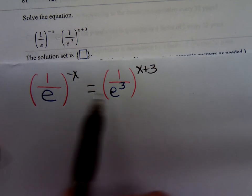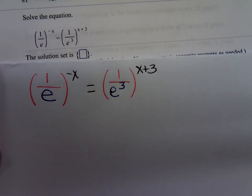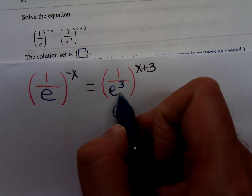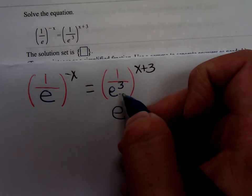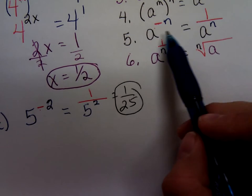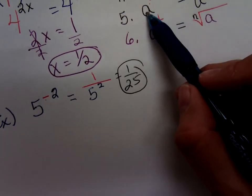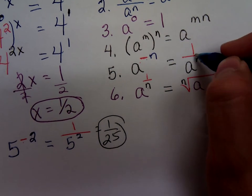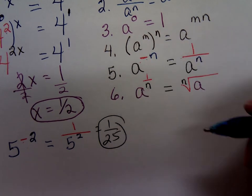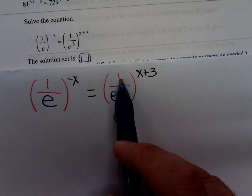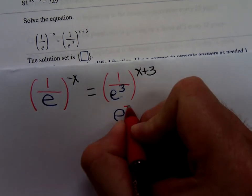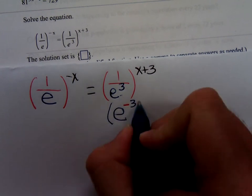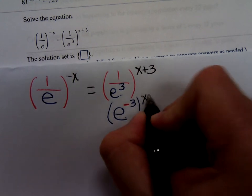If you have an e in these problems, e is going to be the common base. So, how would I write this with just an e and not that 1 over? Remember, it goes back to those properties of exponents that we stated earlier. a to the negative n is 1 over a to the n. So, we look at this backwards. If you have a 1 over and you want to write it without the 1 over, make the exponent negative. So, this red 1 over is the red negative. So, we have e to the negative 3 raised to the x plus 3 power.